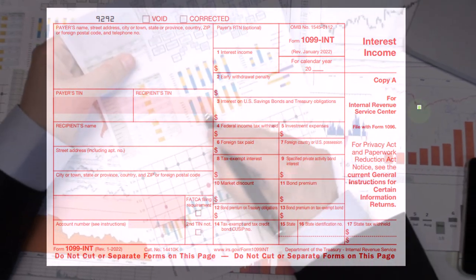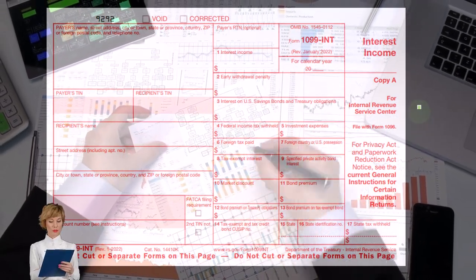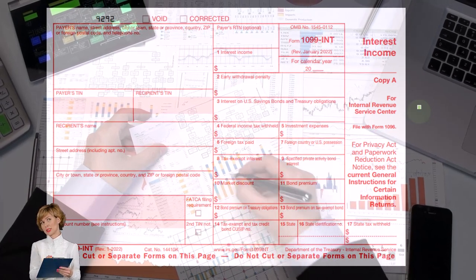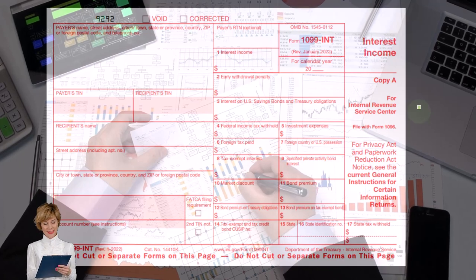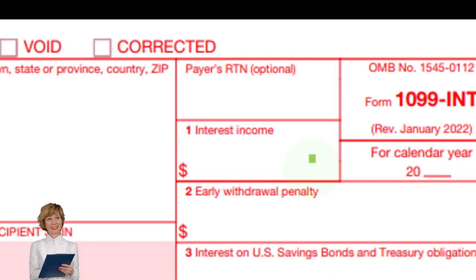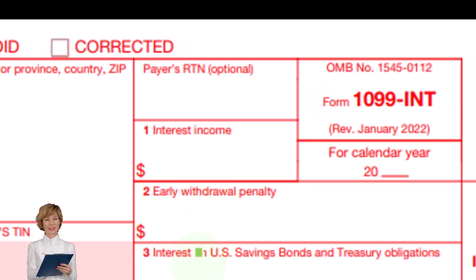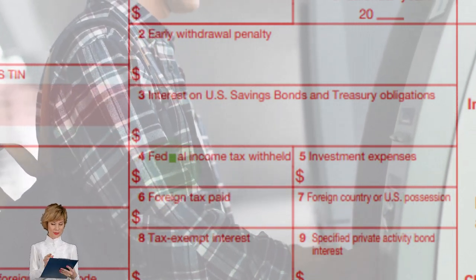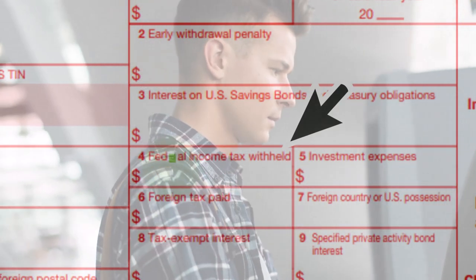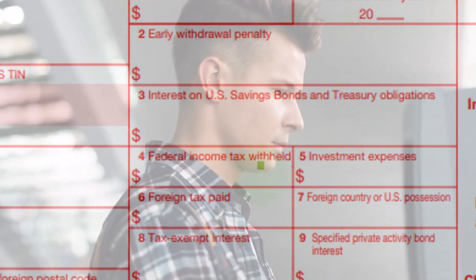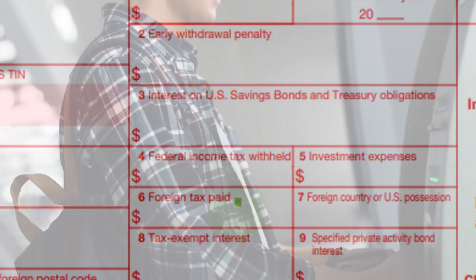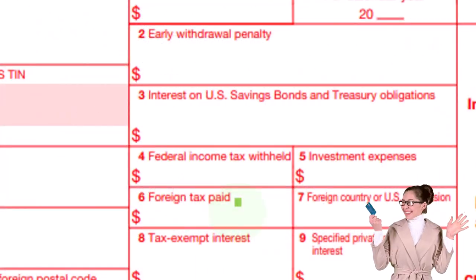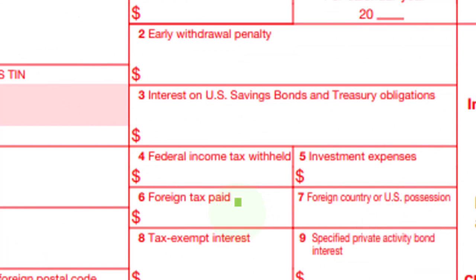When thinking about the reporting forms for interest income, the form will generally be a 1099-INT. It might look a bit different when it comes from your financial institution. Box one is the normal interest income. You could also have box two for early withdrawal penalty, box three for interest on U.S. savings bonds and treasury obligations, box four for federal income tax withheld, investment expenses, and foreign tax paid.